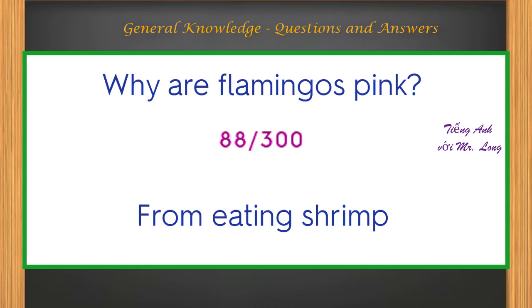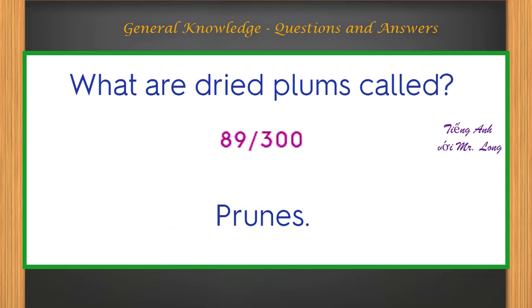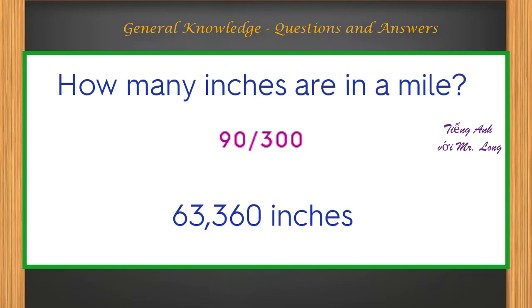Why are flamingos pink? From eating shrimp. What are dried plums called? Prunes. How many inches are in a mile? 63,360 inches.